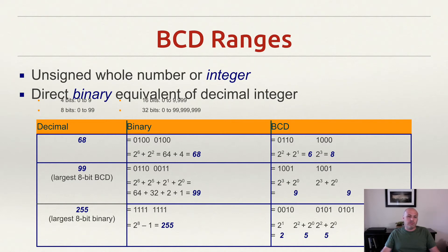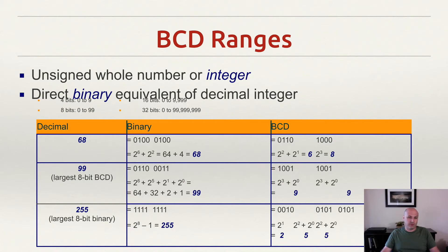Here we have the number 68. In binary, we have a 1 in the 64's place and a 1 in the 4's place, totaling 68. In binary coded decimal, the first nibble represents a 6 and the second nibble represents a 4. Because this number is within the range of 0 to 100, it just so happens that it's also the same range required to express it in binary — so we can use the same number of bits in either circumstance.